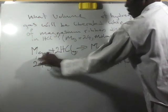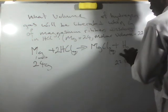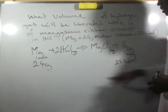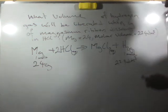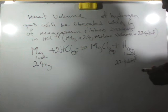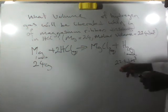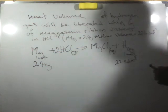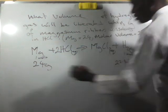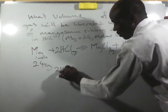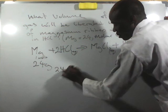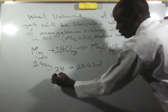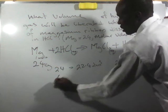So in that case, if 24 grams of magnesium will produce 22.4 dm³ of hydrogen gas, then what it means is that 24 equals 22.4 dm³, then 6 grams...